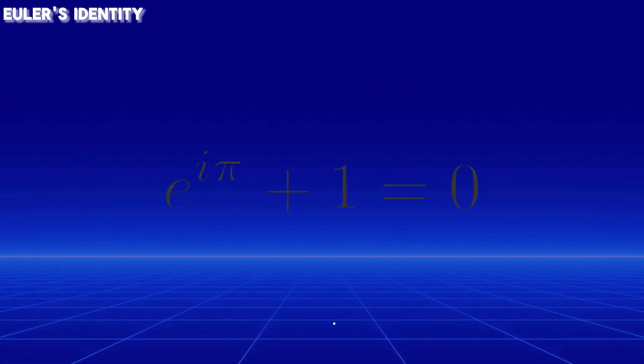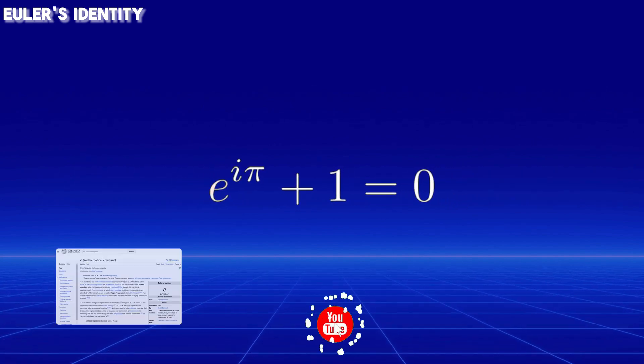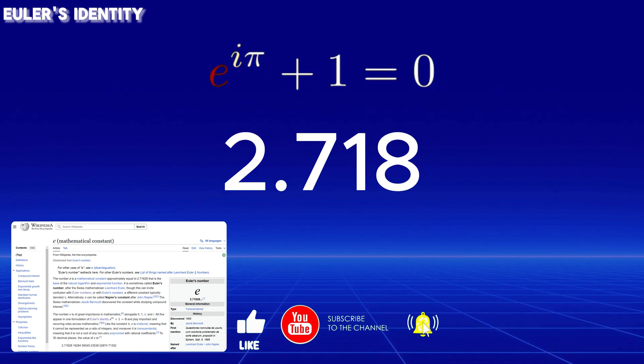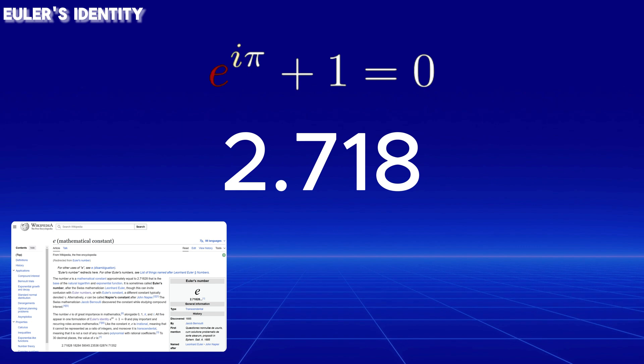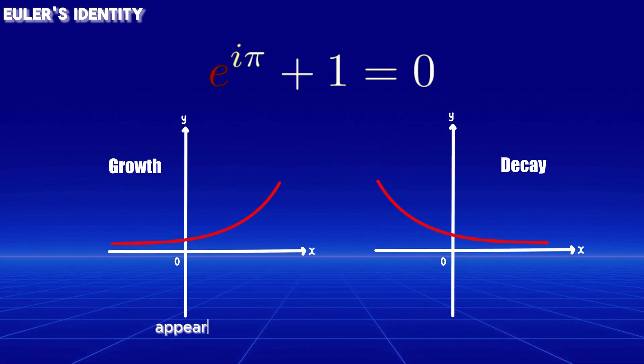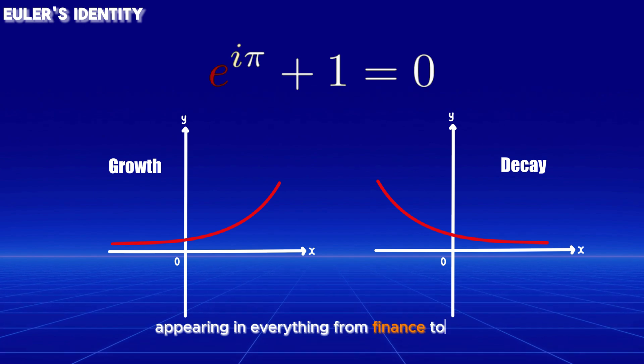First, we have Euler's number, E, approximately 2.718. This number is the foundation of natural exponential growth and decay, appearing in everything from finance to physics.